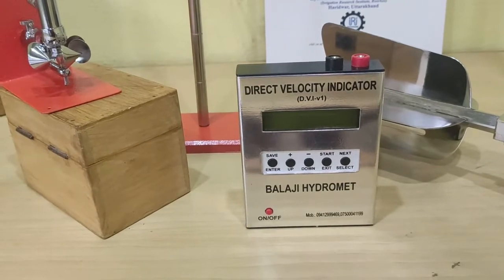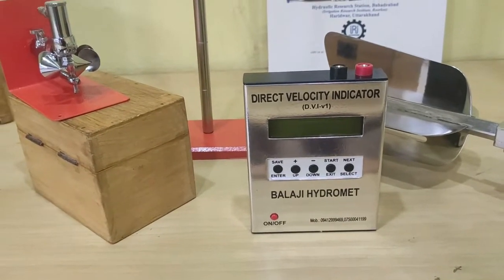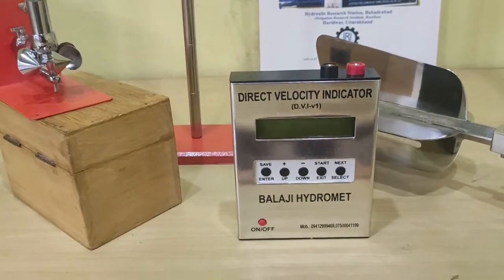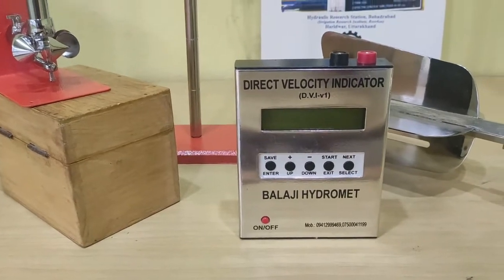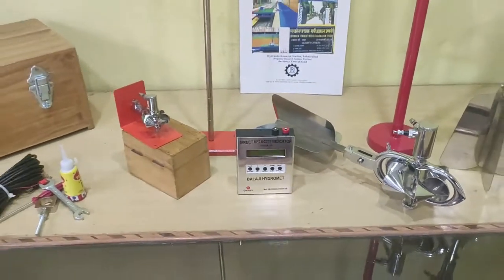Then we connect to this device, a water direct velocity indicator and logger. Here we get the reading of all these current meters in this handheld device.